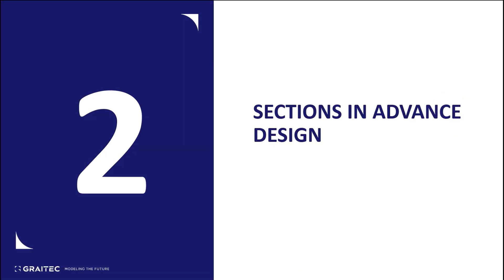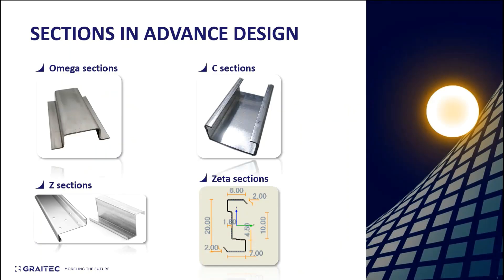Now let's look at the sections available in Advanced Design. There's a variety including omega, C, and zeta sections. These can be chosen either from the database — where we have a wide range of manufacturers in the Grey Tech library — or you can select from the predefined sections available there.